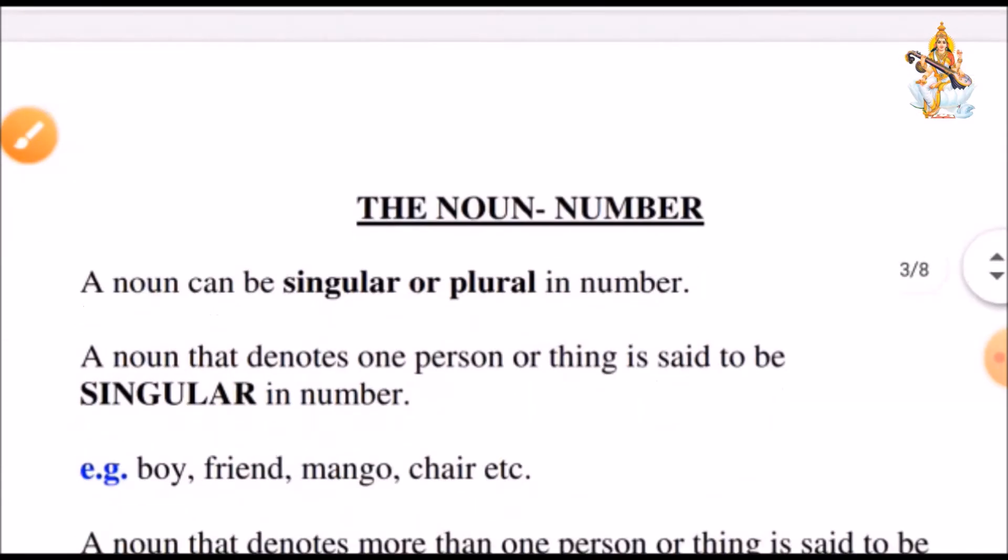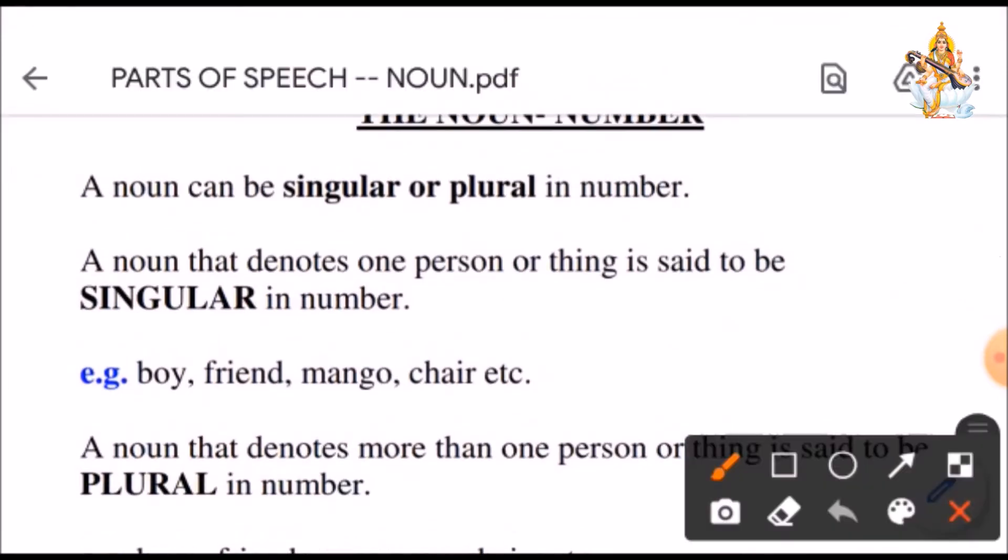Now, let's see the noun numbers. A noun can be singular or plural in number. A noun that denotes one person or thing is said to be singular in number. For example, boy, friend, mango, chair, etc.